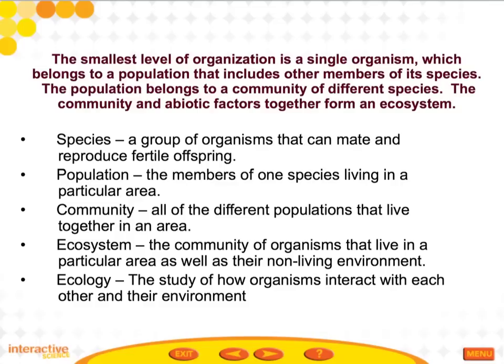Next is how an ecosystem is organized. The smallest level of organization is a single organism, which belongs to a population that includes other members of its species. The population belongs to a community of different species, and the community and abiotic factors together form an ecosystem.